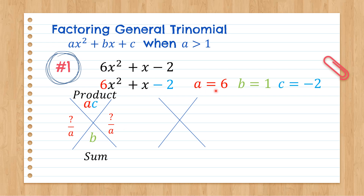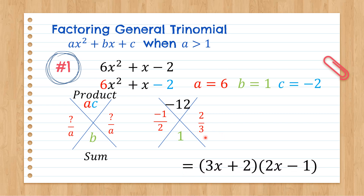So AC is 6 times negative 2, which is negative 12. B is 1. The two factors with a product of negative 12 and a sum of 1 are 4 and negative 3, because 4 times negative 3 is negative 12, and 4 plus negative 3 is 1. Reduce to lowest terms: 4 over 6 becomes 2/3, and negative 3 over 6 becomes negative 1/2. The denominator becomes the coefficient of x in each factor, and the numerator becomes the constant. So 2/3 gives (3x plus 2), and negative 1/2 gives (2x minus 1). That's it for Week 1 of Quarter 1.